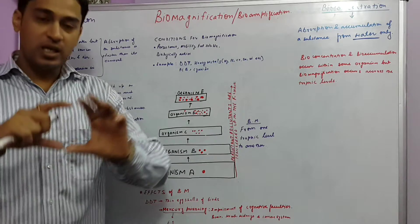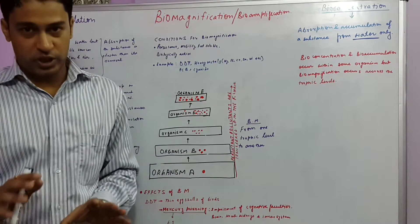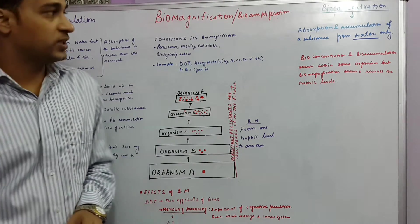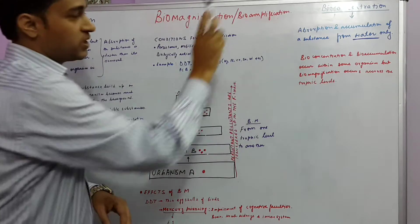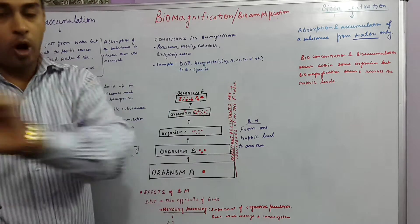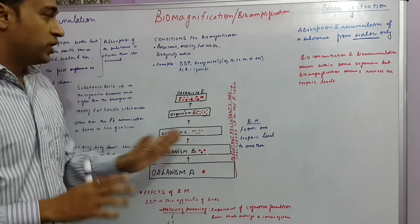So it could be at let's say some stage of the food chain and not across the food chain. So this is common between bioconcentration and bioaccumulation: they occur at some common level of the food chain.